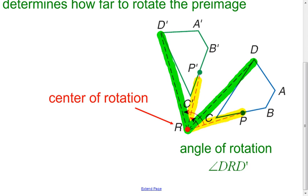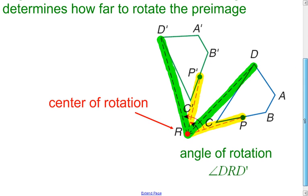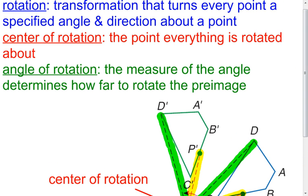If you were to measure both of those angles, both of those angles would be equal in measure. Because it's the same angle of rotation, no matter what point you're rotating. So that's what a rotation is.